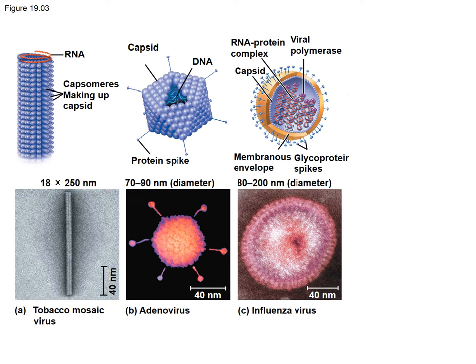Comparing the adenovirus with the influenza virus, you can see that on the outside of both viruses there are spikes sticking out. These are actually proteins, and often these proteins are involved in protein-protein interactions that are required to get them inside the cell. There are fewer spikes on the adenovirus than on the influenza virus. On the influenza virus, the spikes are attached to an envelope, whereas the adenovirus does not have an envelope.